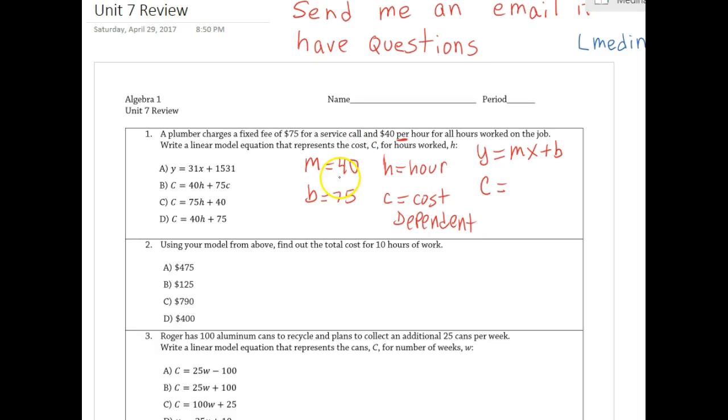The M gives me $40, so I'm just going to write 40. Instead of writing an X, I'm going to write hour. And because I know the value for B is 75, that's how you write the equation, where cost equals $40 per hour plus 75.